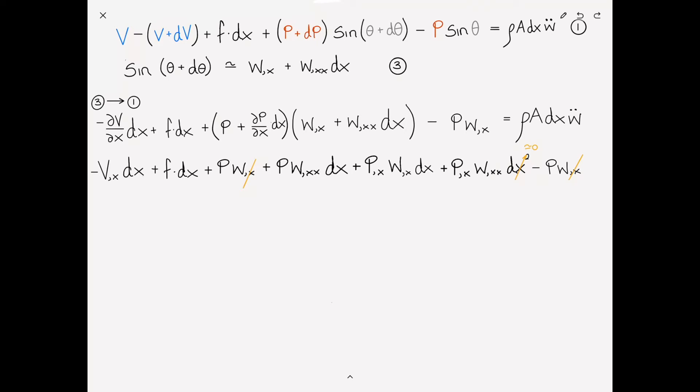Since dx is very small, much less than one, dx squared is negligible compared to the rest. The term P W comma X cancels with the negative P W comma X. We can now cancel and simplify by dividing everything through by dx. That leaves us with minus V comma X plus F plus partial with respect to X of P W comma X, which is P W comma XX plus P comma X W comma X by the product rule, equals rho A W double dot. Let's call this equation four.